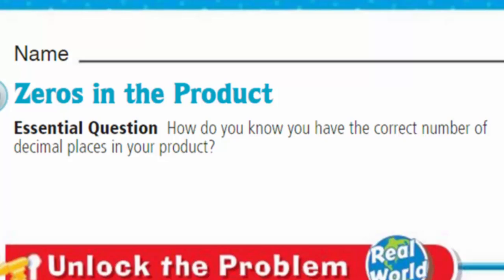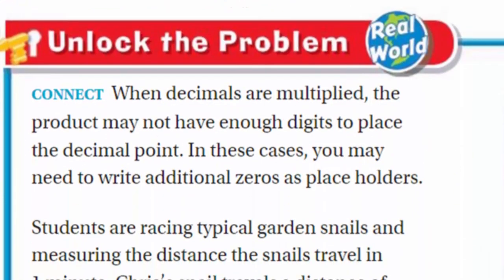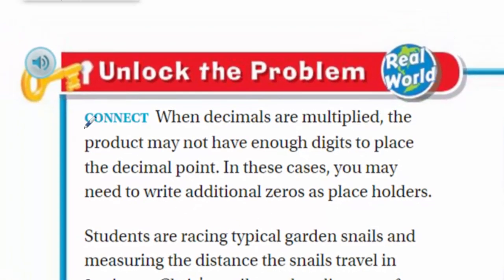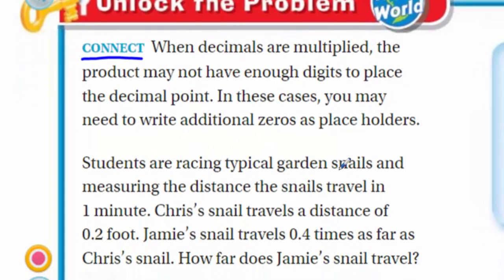What do we have here? We have 'unlock the problem' — let's unlock it. It says 'connect': when decimals are multiplied, the product may not have enough digits to place the decimal point. In these cases, you may need to write additional zeros as placeholders. Students are racing typical garden snails and measuring the distance the snails travel in one minute. Chris's snail travels a distance of 0.2 foot — two tenths of a foot. Jamie's snail travels 0.4 times as far as Chris's snail. How far does Jamie's snail travel?